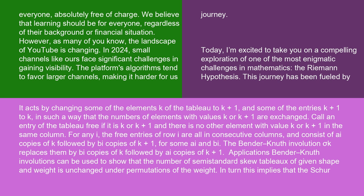Call an entry of the tableau free if it is k or k plus 1, and there is no other element with value k or k plus 1 in the same column. For any i, the free entries of row i are all in consecutive columns and consist of a_i copies of k followed by b_i copies of k plus 1, for some a_i and b_i. The Bender-Knuth involution sigma_k replaces them by b_i copies of k followed by a_i copies of k plus 1.